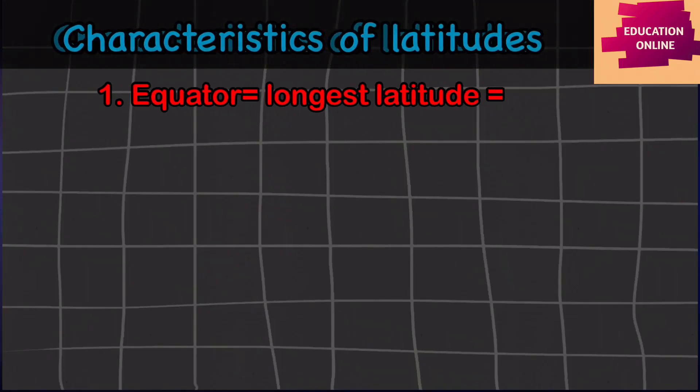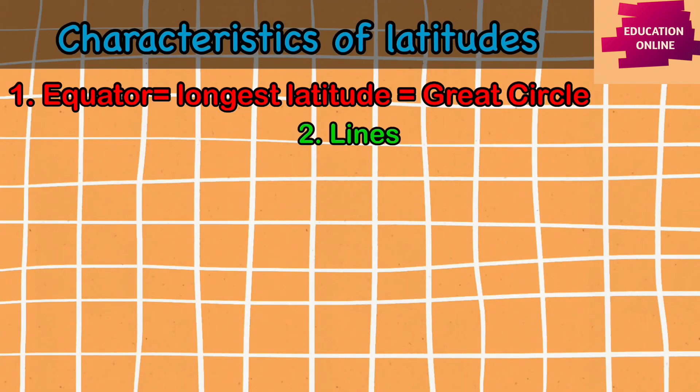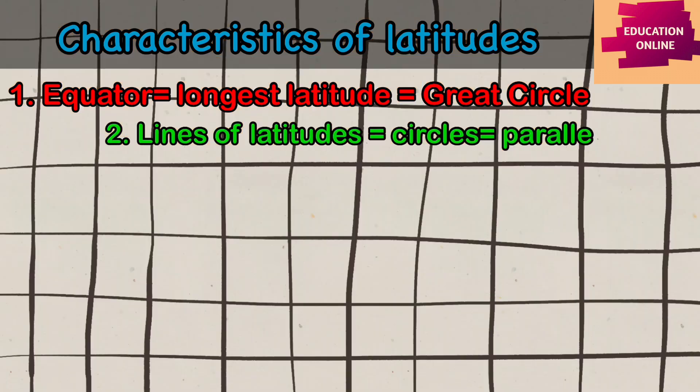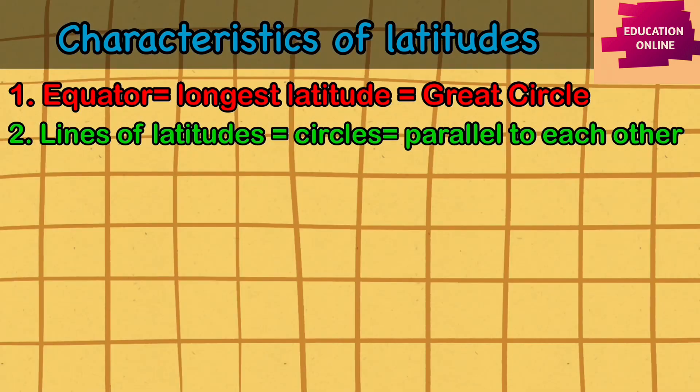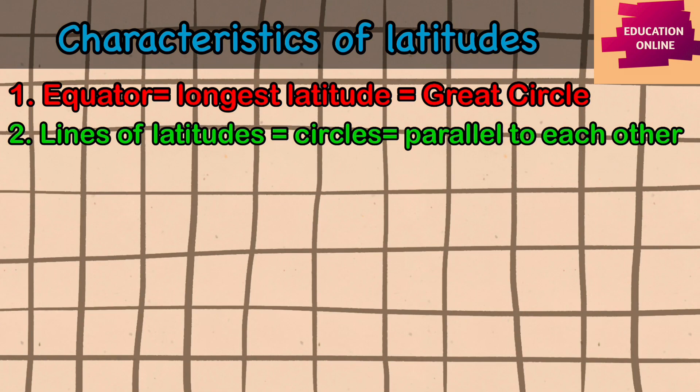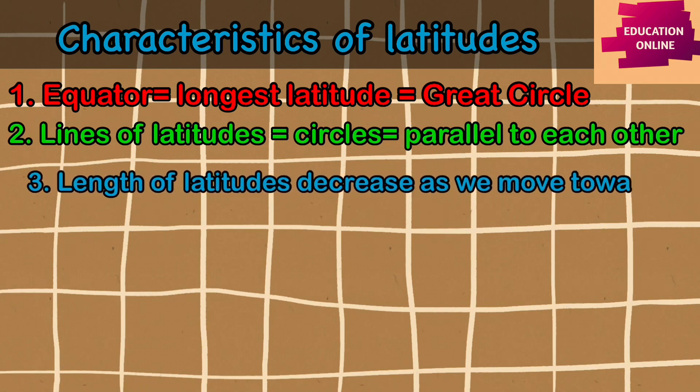Let us learn about some of the characteristics of these latitudes. The equator is the longest latitude and therefore is also called the great circle. The other lines of latitude are also circles running parallel to each other, that is why these lines are also known as parallels of latitude. They never intersect each other. The length of the latitudes decrease as we move farther away from the equator towards the poles.